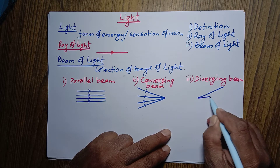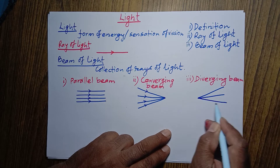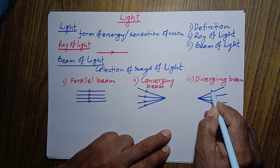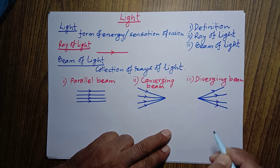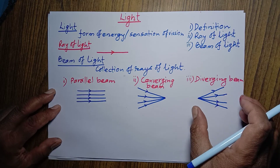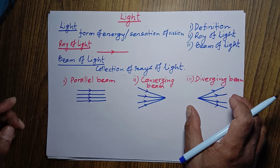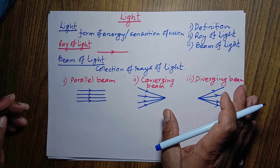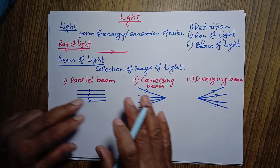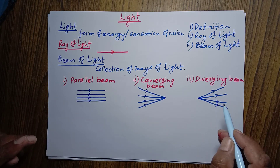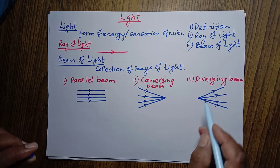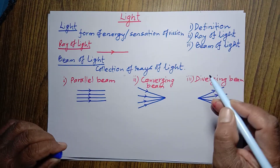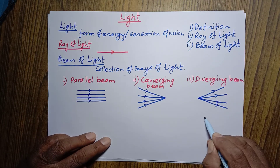Diverging beam of light means light rays are coming from a point and moving away from each other. This can be seen in a concave lens — when light passes through a concave lens, the light rays diverge. This is how we can answer this question very simply.